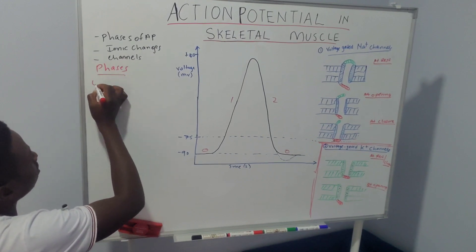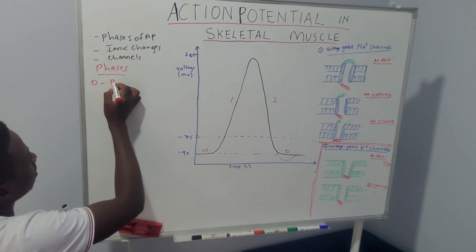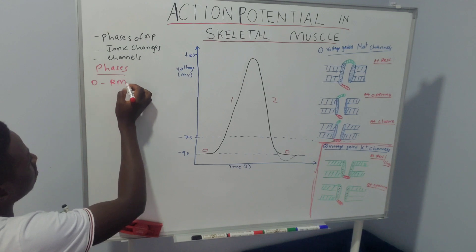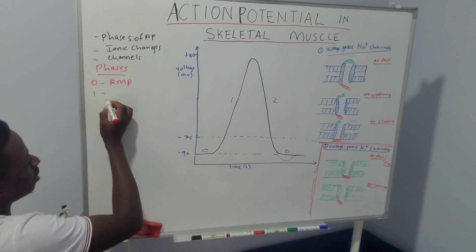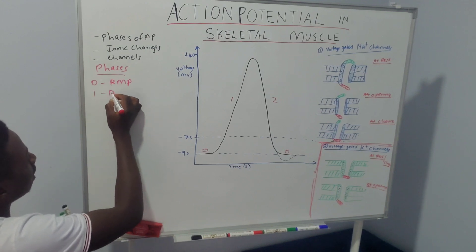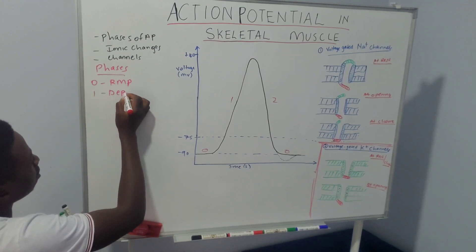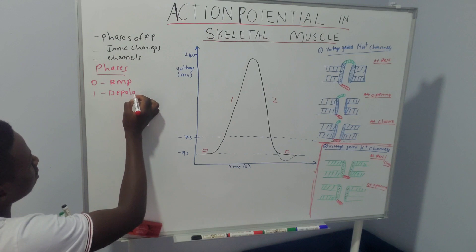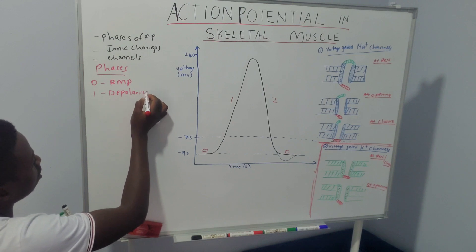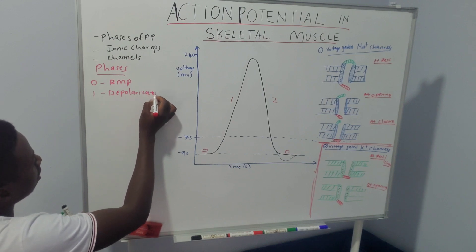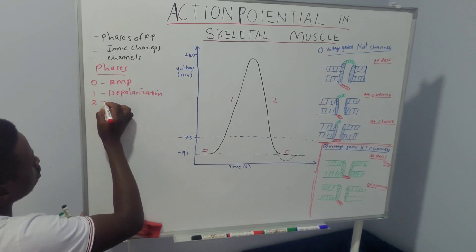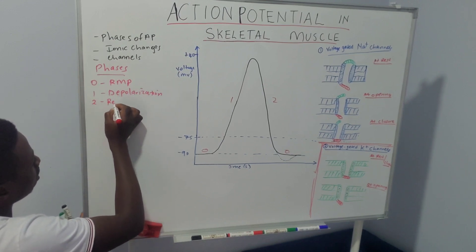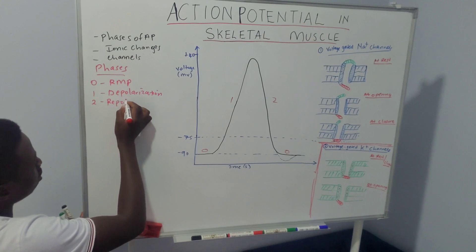Phase 0 is when the membrane is at resting membrane potential. Phase 1 is when the membrane undergoes depolarization. And then phase 2 is when it undergoes repolarization.